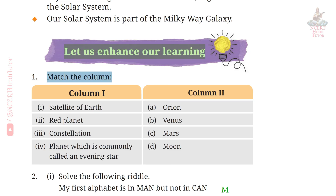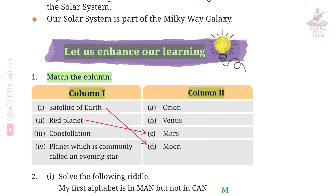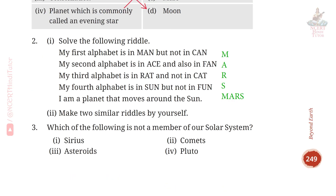Question 1: Match the Column. Column 1 and Column 2. First — Satellite of Earth: D, Moon. Second — Red Planet: C, Mars. Third — Constellation: A, Orion. Fourth — Planet which is commonly called an evening star: B, Venus.